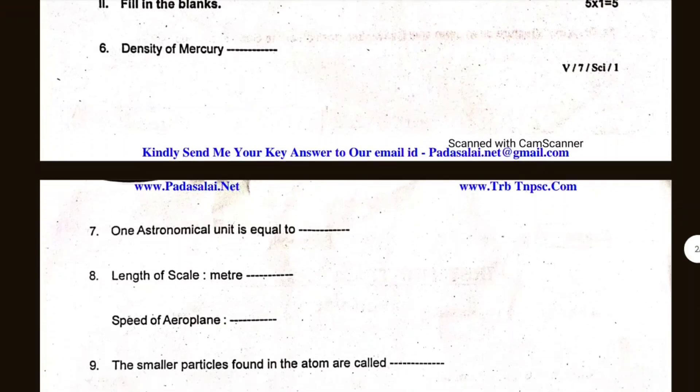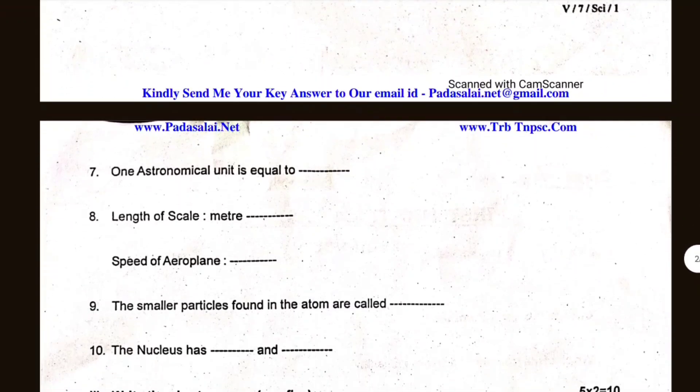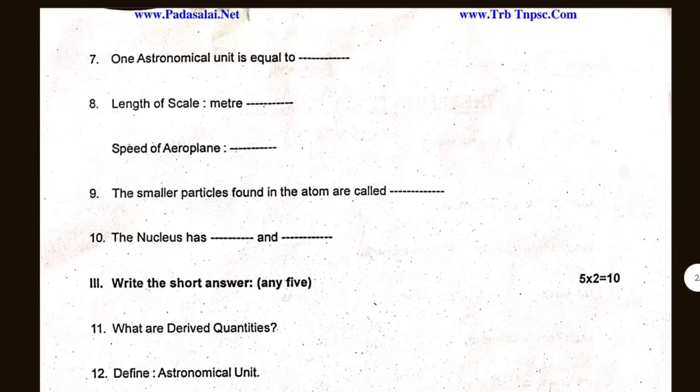Length of scale meter. Speed of air plane. The smaller particles found in the atom are called. The nucleus has dash and dash.